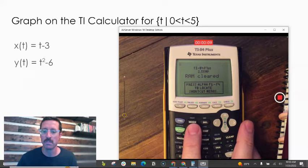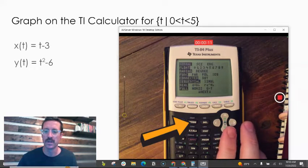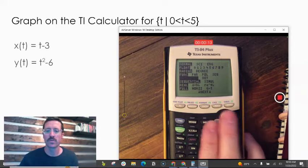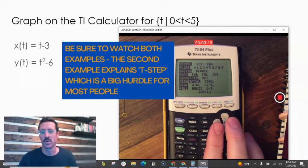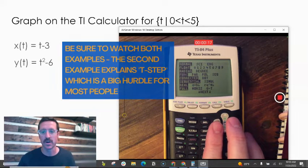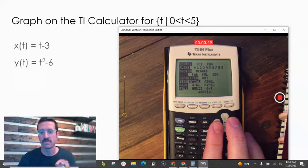To graph parametric equations on the TI calculator, first go to mode and push that mode button. You can see on that fourth row—on mine it's the fourth row, it might be slightly different for yours depending on your operating system.